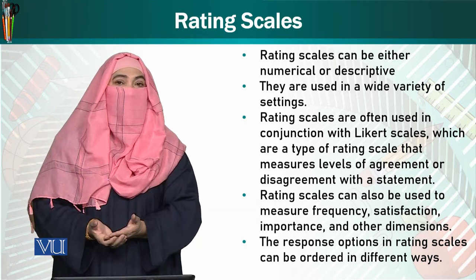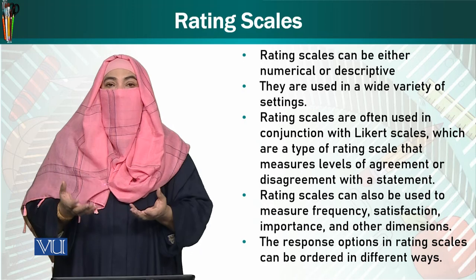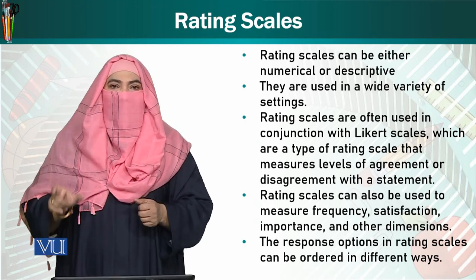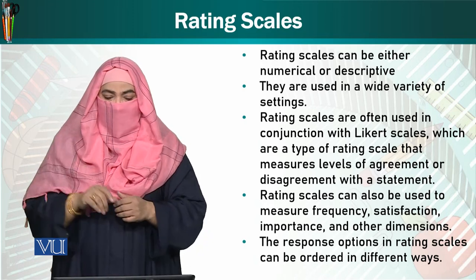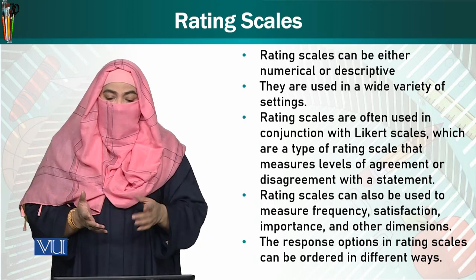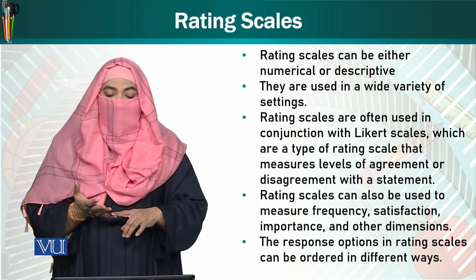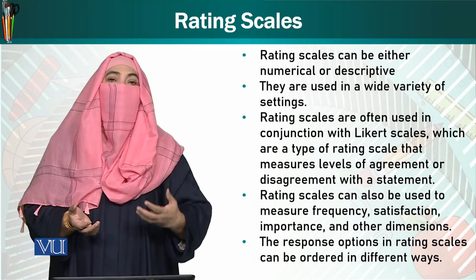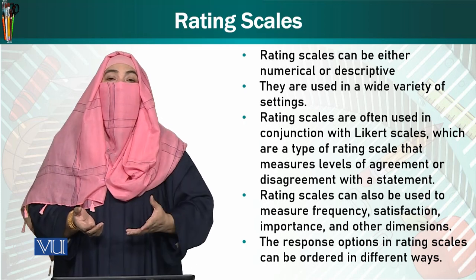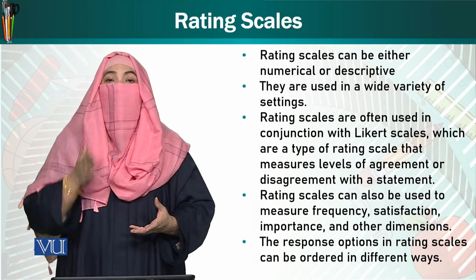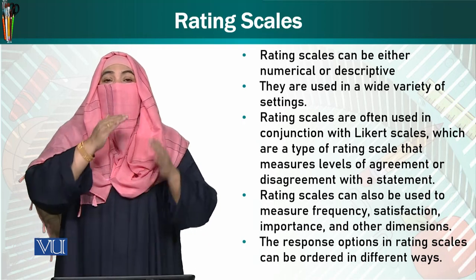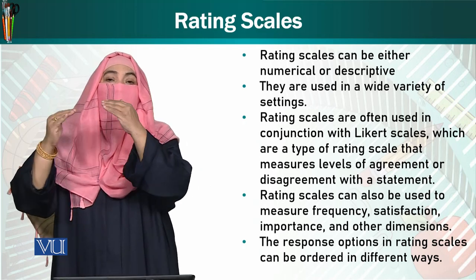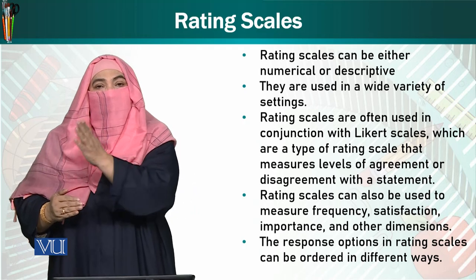We can cover all of these indicators and mark them on which level they are. Rating scales are often used in conjunction with Likert scales, which are a type of rating scale that measures levels of agreement or disagreement with a statement. We use this form with our indicators, and in 3, 5, or 7 columns, we ask participants to agree or disagree.